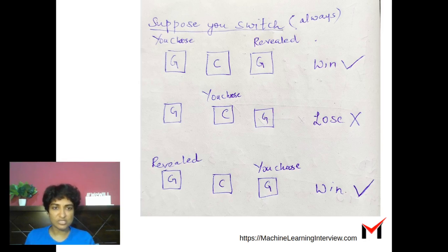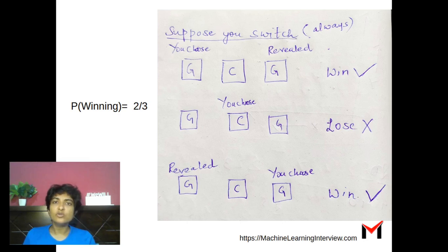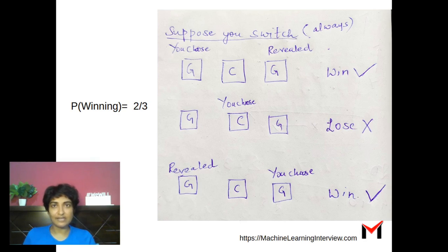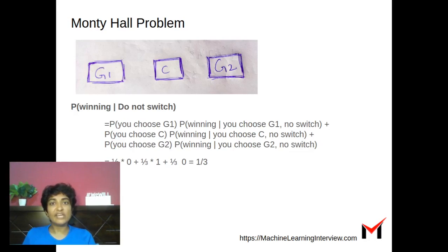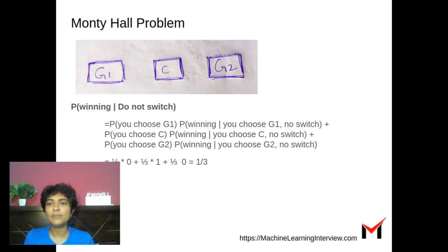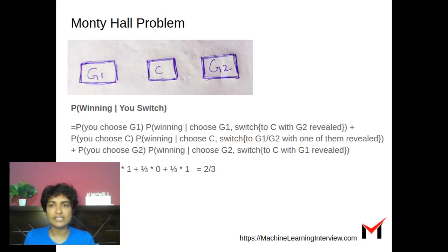What we see here is that in the three possibilities, we are winning in two of them and losing in only one. Hence, the probability of winning if you do switch is two-thirds. Switching is therefore a better choice, though it might seem counterintuitive. We can also look at this from the perspective of conditional probability using the total probability theorem, and we get the same result: probability of winning without switching is one-third, and with switching is two-thirds.